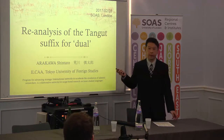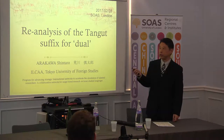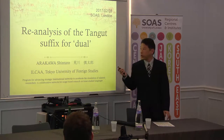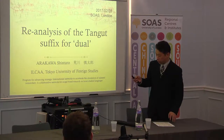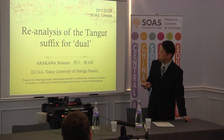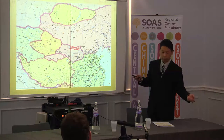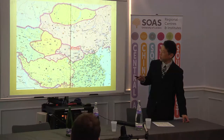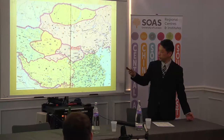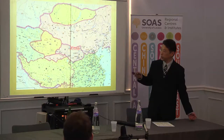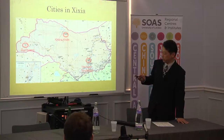Now we go to the next stage in Tangut language — the grammar of Tangut. The topic of today is the suffix of Tangut. This is general information for the Xi Xia Dynasty, located in the northwest area of China. These are the main cities of the Xi Xia Dynasty.